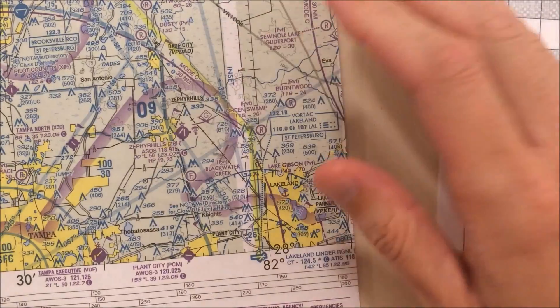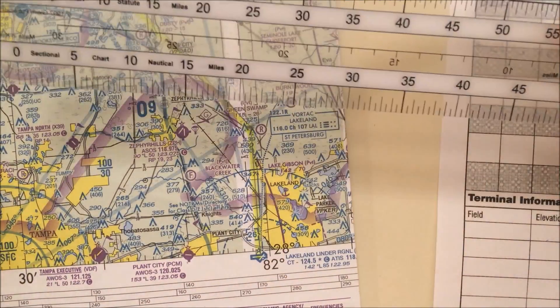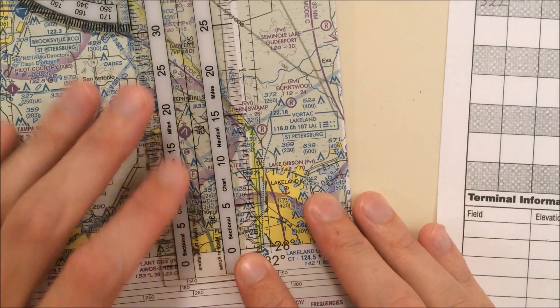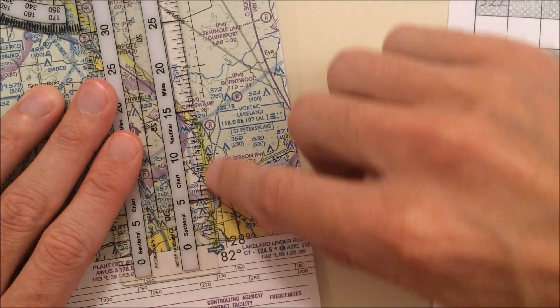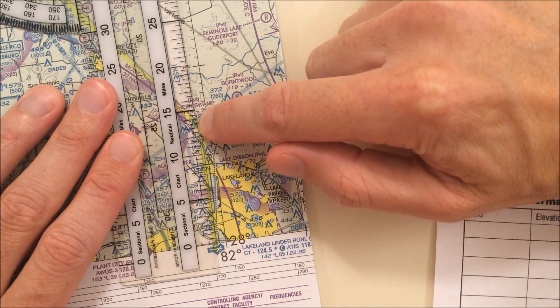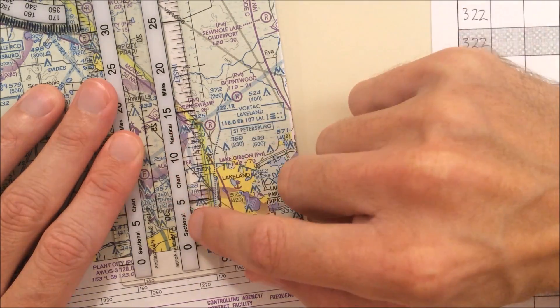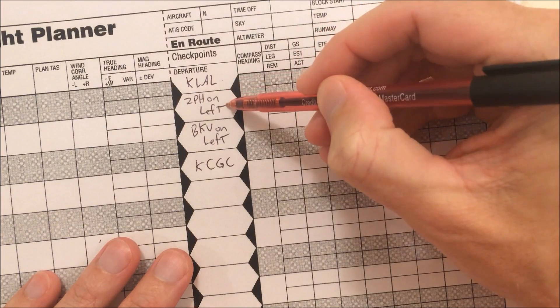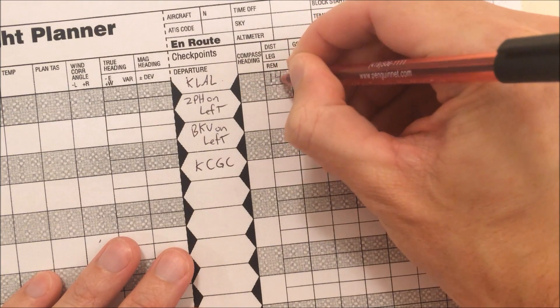Next, we need to measure distance between the waypoints. So again, using your plotter, find the point where it has zero and measure the distance from your departure airport to your first checkpoint. You can see as I go up that it's about 14 miles, 14 nautical miles, again using the sectional chart scale. So now I can fill in my first distance. So from Lakeland to my first checkpoint is 14 nautical miles.